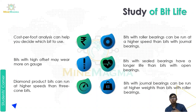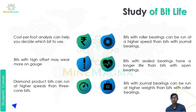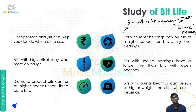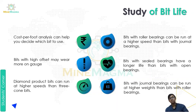Second, bits with roller bearings can be run at higher speeds than bits with general bearings. Third, bits with high offset may wear more on gauge.